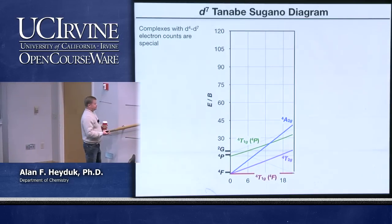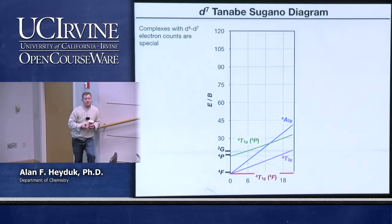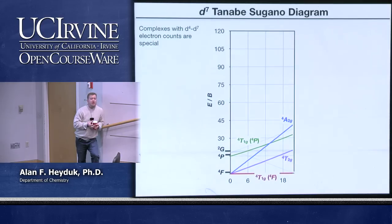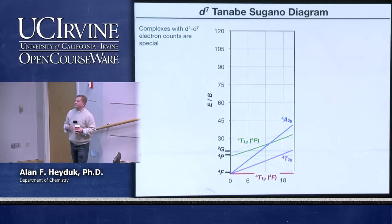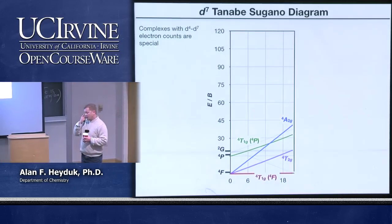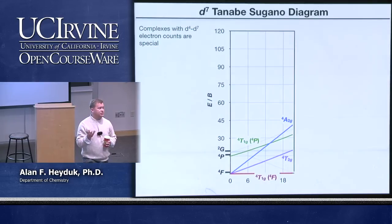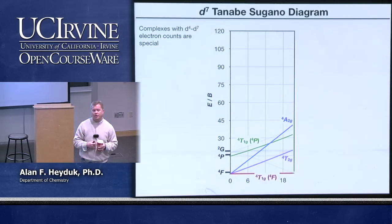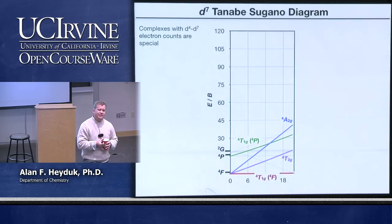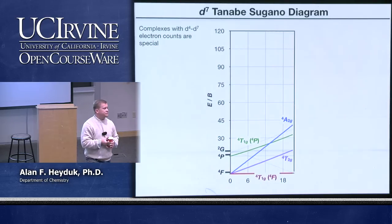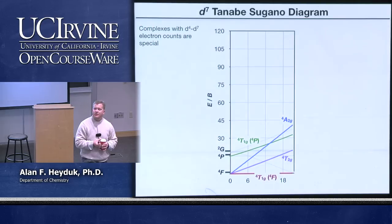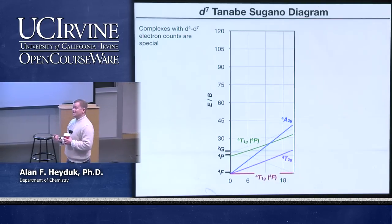That was D2. I hope it's obvious why we ended up with three electronic transitions. D2 is pretty much the simplest of the multi-electron states. D3 is a little more complex but still fairly straightforward. It turns out D9 looks just like D1 — there's only one hole that can move. D8 looks just like D2. D4 through D7 are more complicated — those are the electron counts where the complex can be either high spin or low spin.